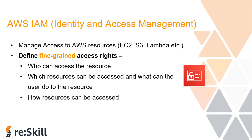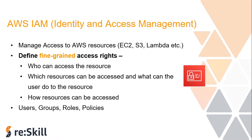With IAM you can grant different permissions to different people for different resources. For example, some users might get full access to EC2, S3, and DynamoDB, while others get only read-only access to a few S3 buckets, and others might administer only specific EC2 instances. The four main components of IAM are users, groups, roles, and policies, which we will discuss one by one.